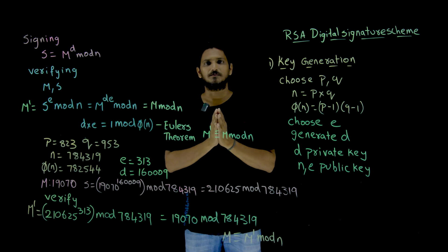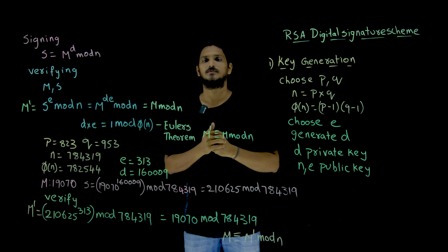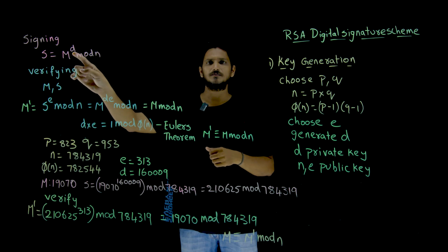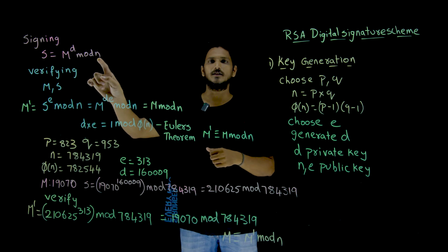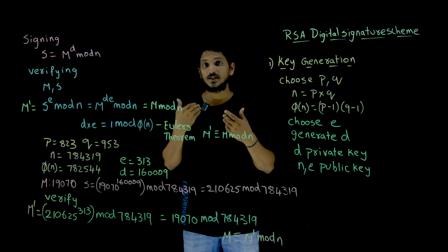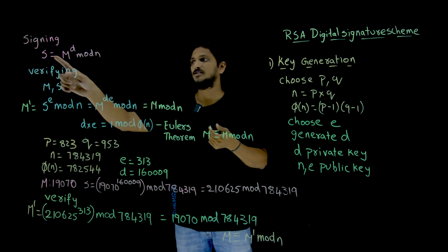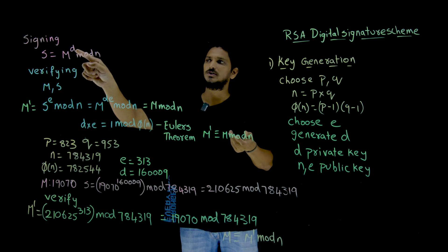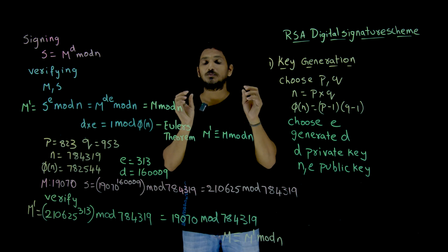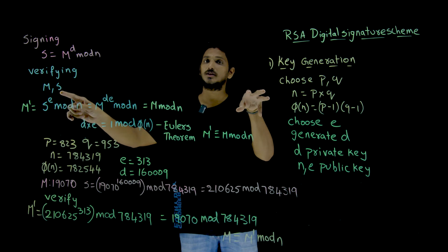Suppose you are having a message M and you want to send this message — you have to sign this message. Take the message M and using the private key compute M power D mod N. This is what we call the signature S. Those who want to send the message will send both the message and the signature. They generate the signature S using the private key, and the message and signature are both sent to the receiver.